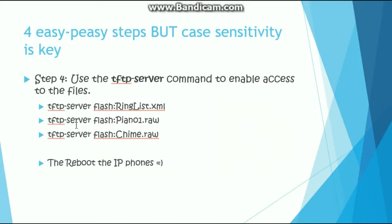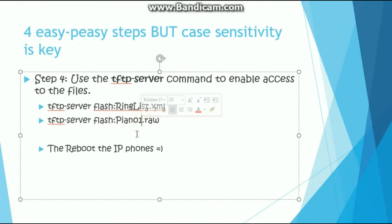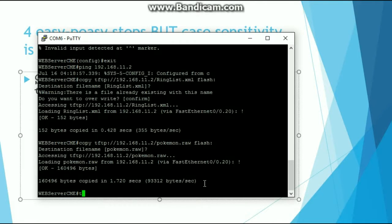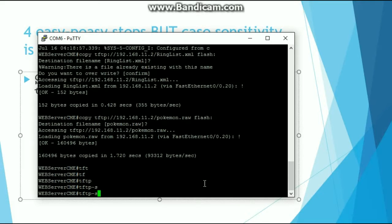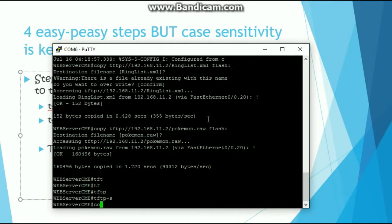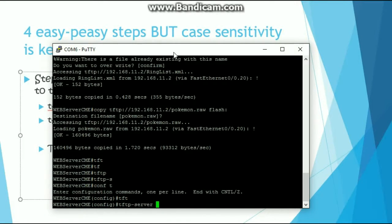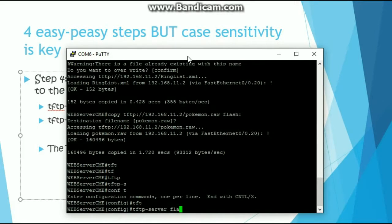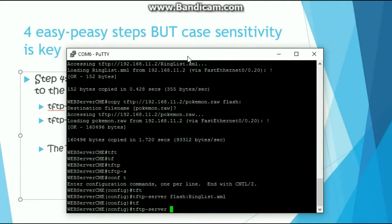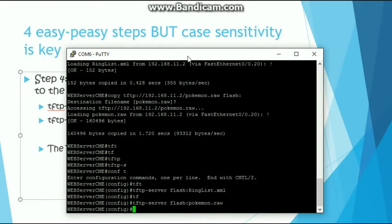Step four: tell the router to be a TFTP server so that when the phones access the files on flash, the router itself serves them. In global config mode, enter: tftp-server flash:ringlist.xml, and then: tftp-server flash:pokemon.raw. That should be it. Now we just need to reset the phones — let's reboot them and then we should see the ringtone in the phone's directory.